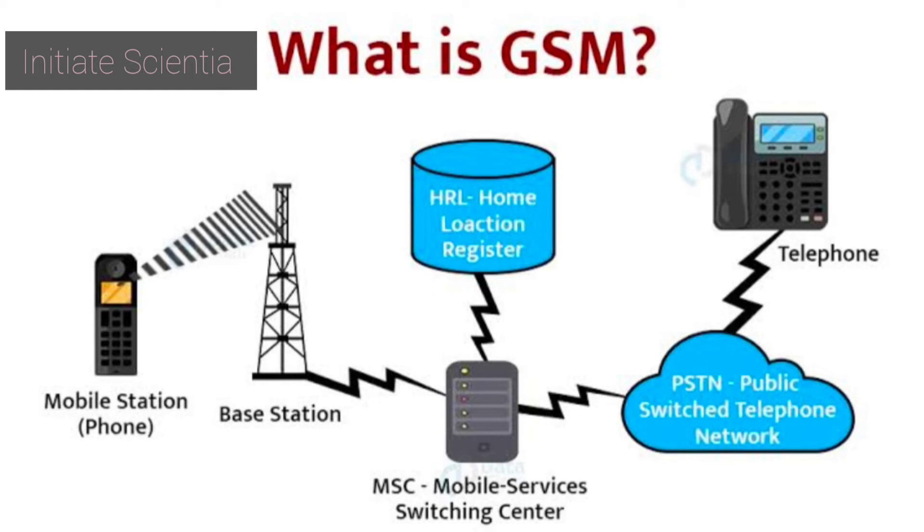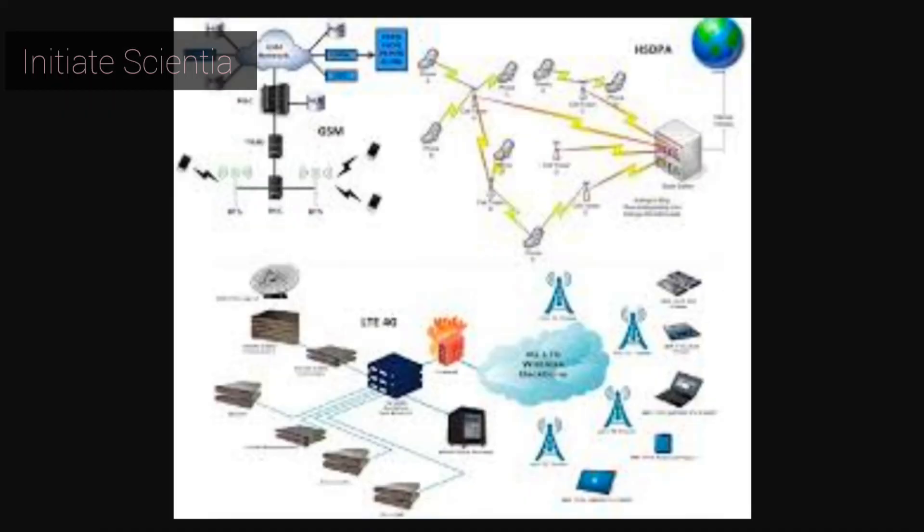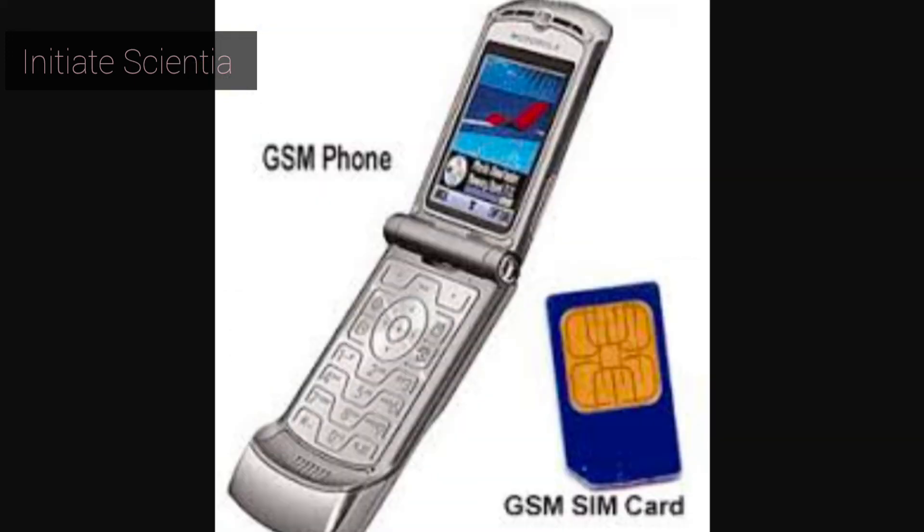Where these bands were already allocated, the 850 MHz and the 1900 MHz bands were used instead. For example, in Canada and the United States. In rare cases, the 400 and 450 MHz frequency bands are assigned in some countries because they were previously used for first generation systems.